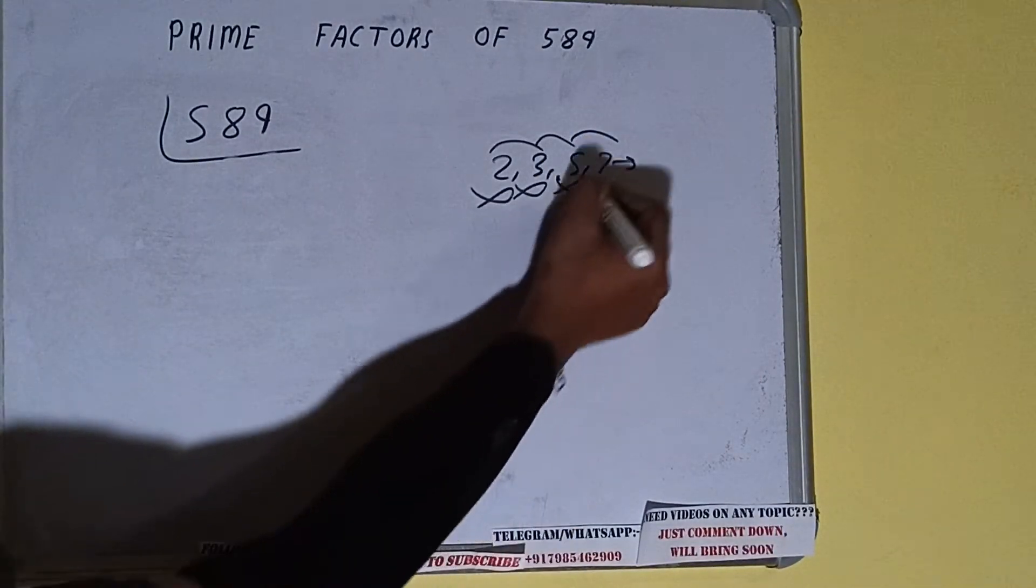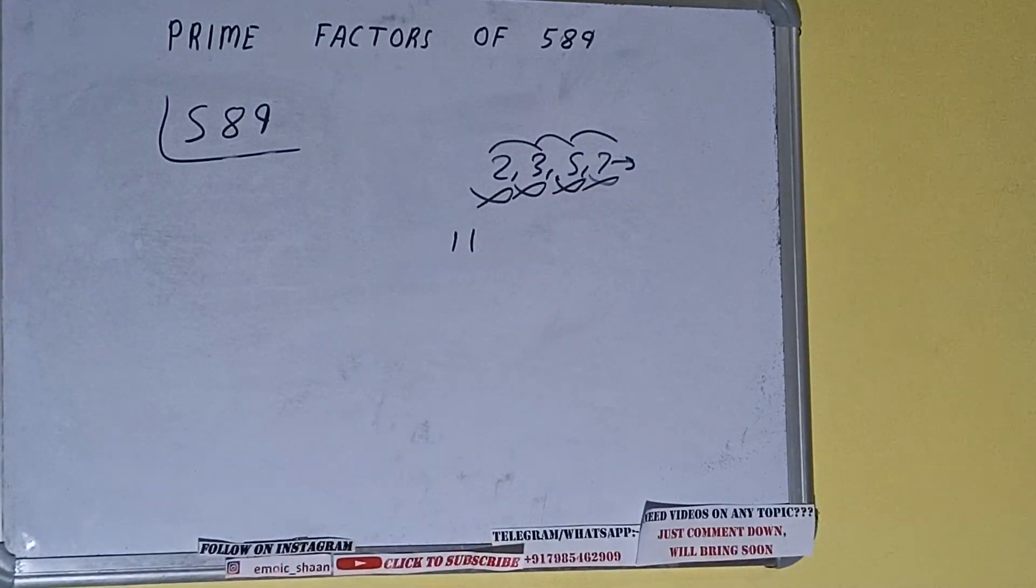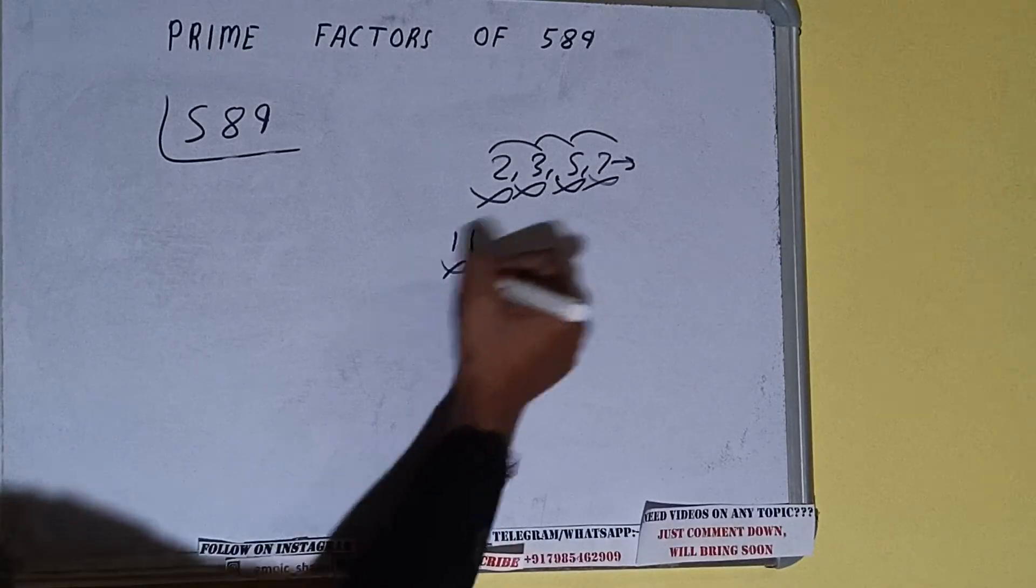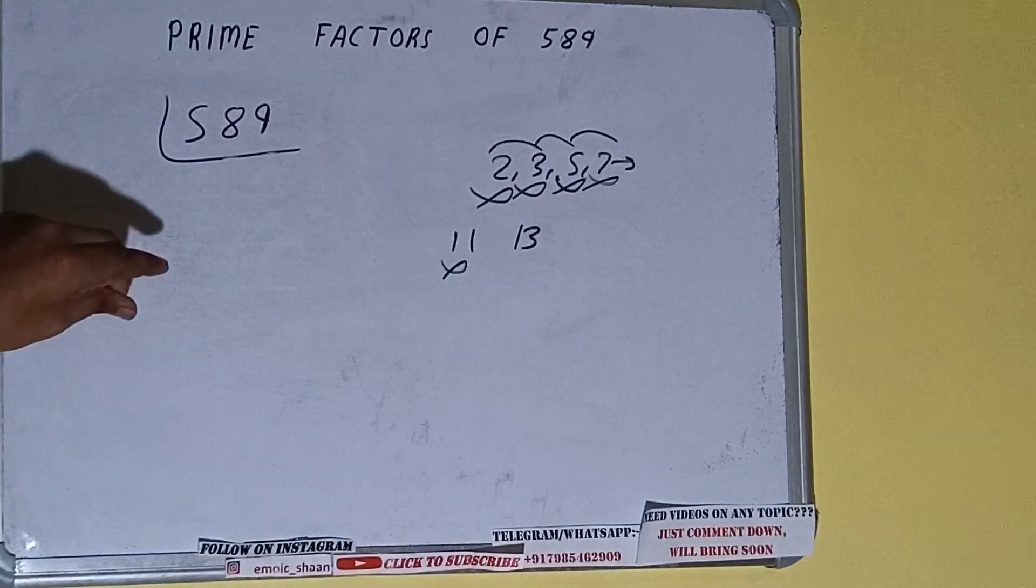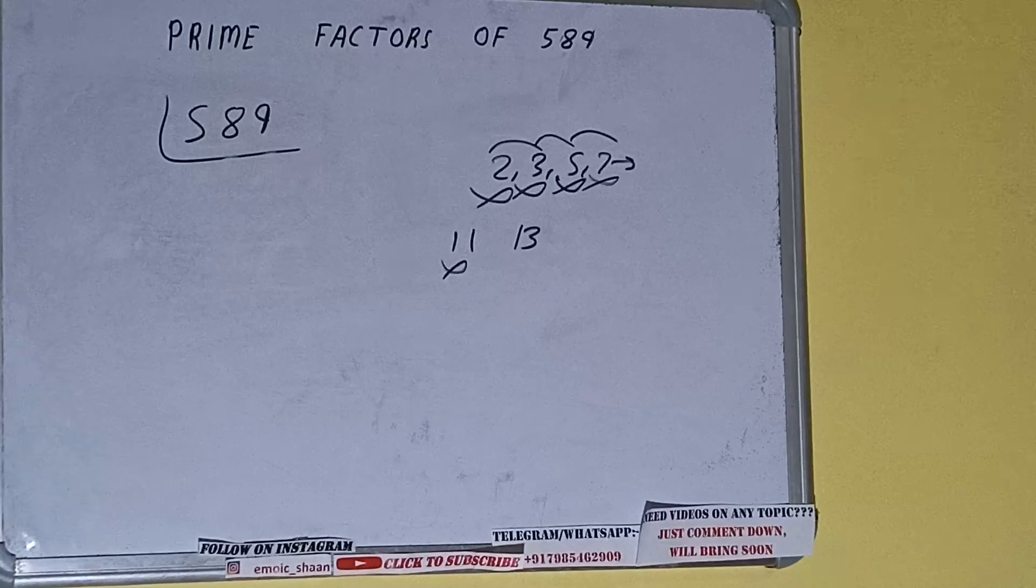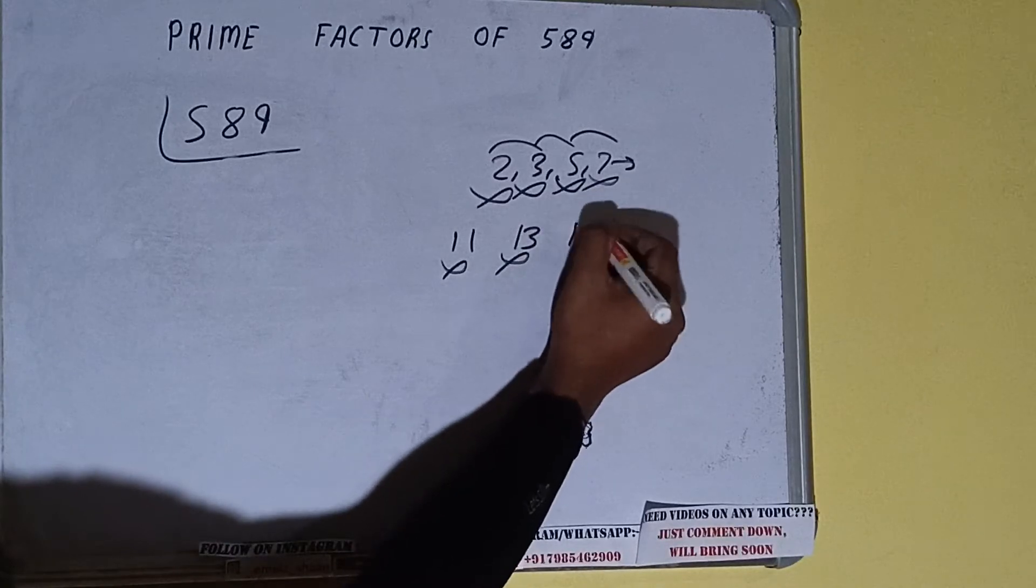Let's check with 11. 11 fives are 55, 3 9. With 11 also not divisible. Let's check with 13. 13 fours are 52, 6 9. No, with 13 also not divisible.